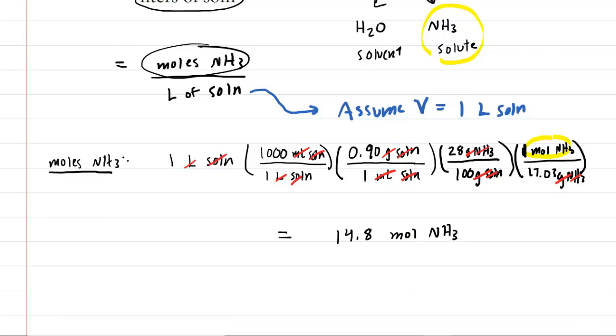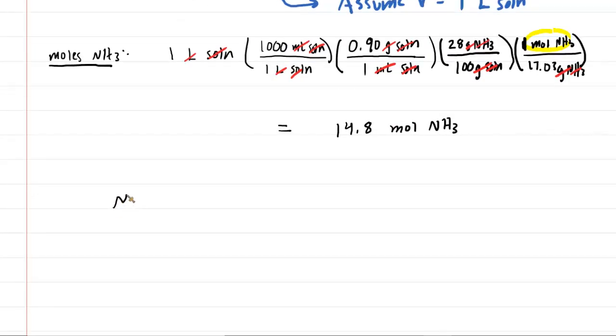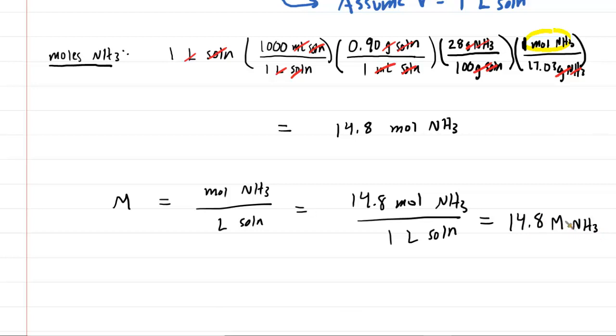This is great because recall that we know the molarity of the ammonia, symbolized by capital M, is the moles of ammonia divided by the liters of solution, and we know both of those numbers. We have the 14.8 moles of ammonia that we just calculated, and then we can divide that by the assumed volume of one liter of our solution. When we work this out, this remains 14.8. The symbol for molarity is capital M, and this is the molarity for the ammonia present in this solution. That is the correct answer to this question.